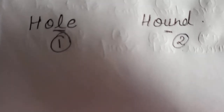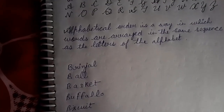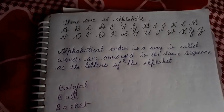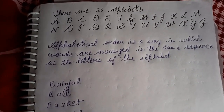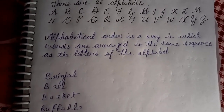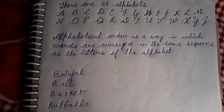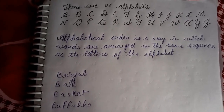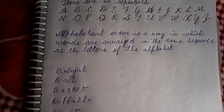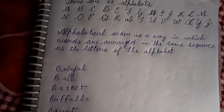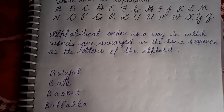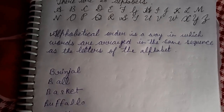In the dictionary, all the words are arranged according to alphabetical order. Suppose you want to find words starting from B — you have to go after A. So first, words starting from A are given in the dictionary, then words from B, and so on.